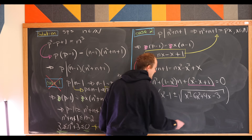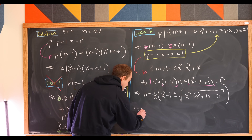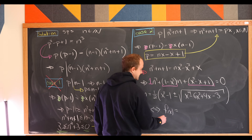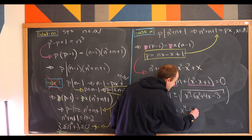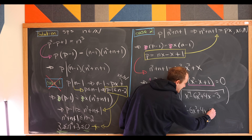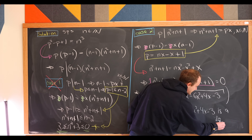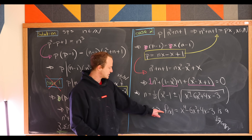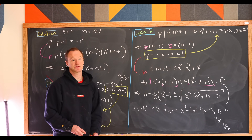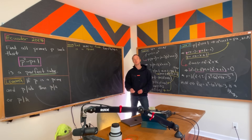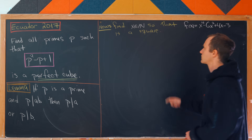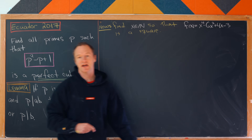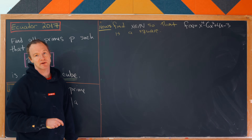So n is a natural number if and only if f(x) equals x to the 4th minus 6x squared plus 4x minus 3 is a perfect square. We need to figure out which natural numbers x make this expression a perfect square, and we'll do that using one of my favorite tricks: bounding f(x) between two consecutive perfect squares.